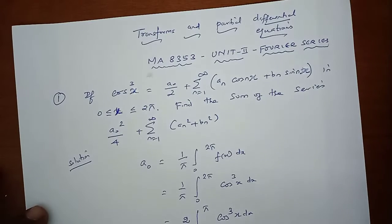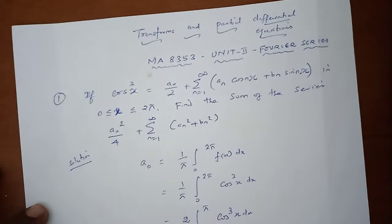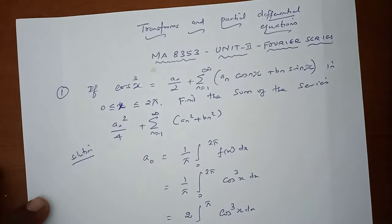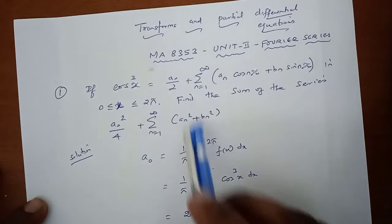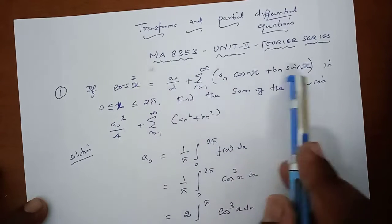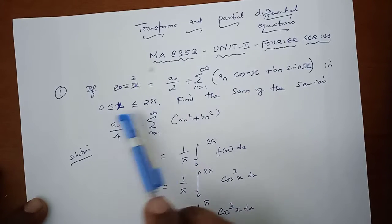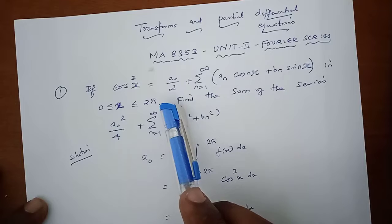find the sum of the series a₀²/4 plus sigma n=1 to infinity of (aₙ² + bₙ²). This is the statement of the problem. So cos³x is equal to the definition of a Fourier series in the full range class interval 0 to 2π.